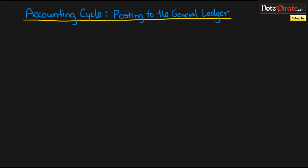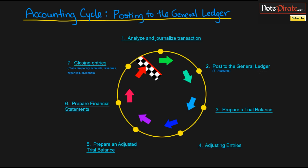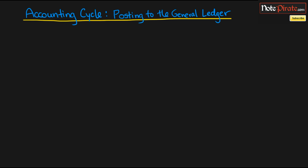Now that we understand transaction analysis and how to report journal entries, we get to move on to the second step within our accounting cycle, which is known as posting to the general ledger. We're going to be learning about T-accounts as well in this presentation. It's the second step, which I've highlighted right there, and we're going to be moving through all seven steps until we finish this series on the accounting cycle.